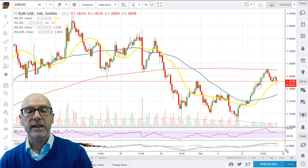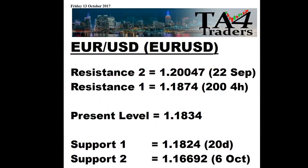Looking at the support and resistance levels: the 200 on the 4-hour is all-important at 1.1874, and then the high of the 22nd of September at 1.20047. Support is at the 20 day at 1.1824, and then the second support is the low of the 6th of October at 1.16692.